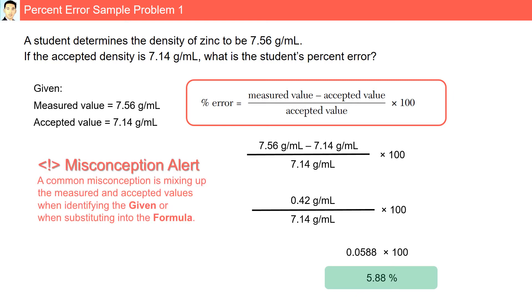Misconception alert. A common misconception is mixing up the measured and accepted values when identifying the given or when substituting into the formula.